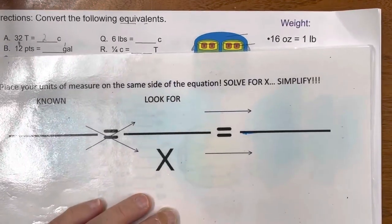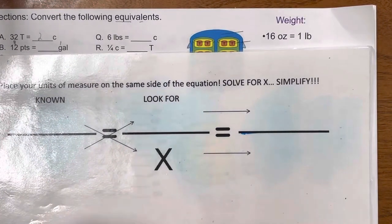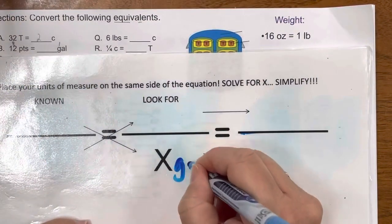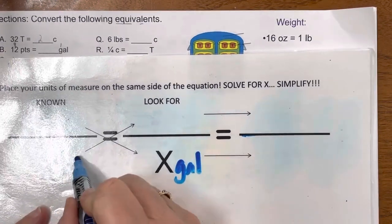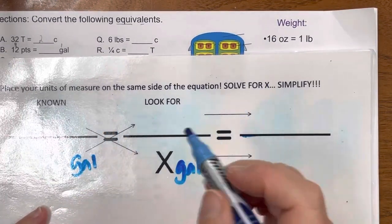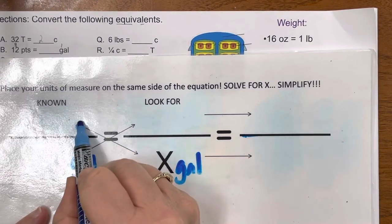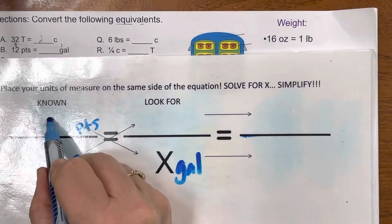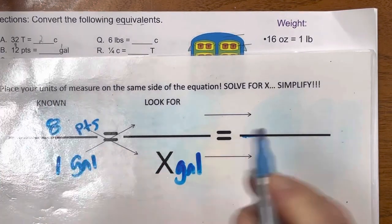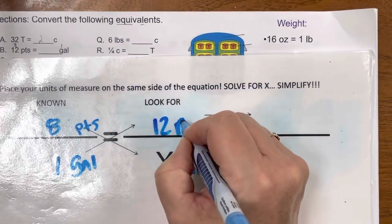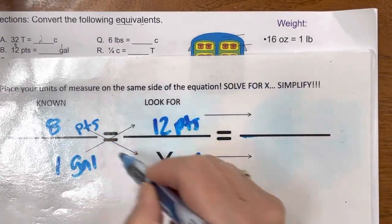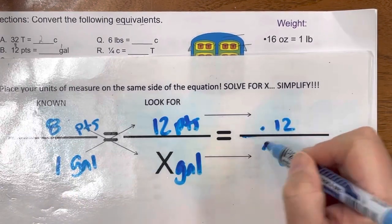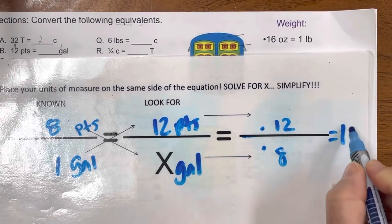Or, I can get my formula back out. And I can plug in some numbers. My known, actually, first I'm going to start here, is I'm looking for x, which is gallons. My known, and remember you have to keep the units of measures the same on each side of the equation. But my known is that there are 8 pints per gallon. I have 12 pints. I do my math, and I cross multiply. And this is a divider. 12 divided by 8 is 1 and a half.